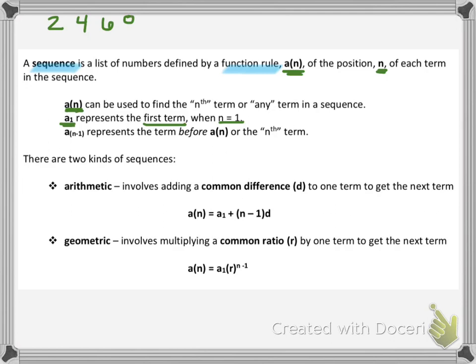So if we were doing the sequence 2, 4, 6, 8, the first position would be the 2, so it would have an n of 1. Then 4 would have an n of 2, 6 would have an n of 3, and so on. A sub n minus 1 represents the term before another term. Sometimes in a sequence, we'll take one of the terms and use it to find the next term, rather than using an input value.